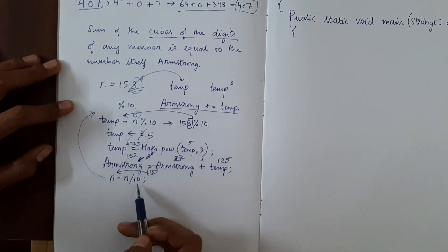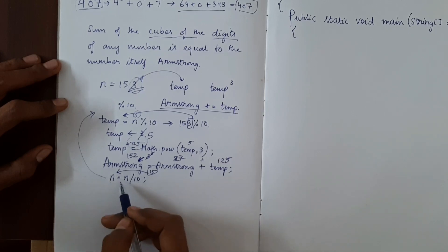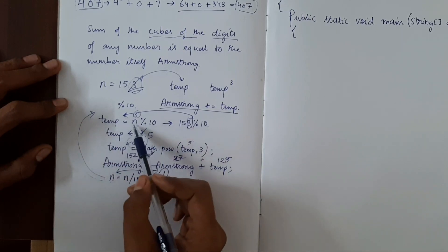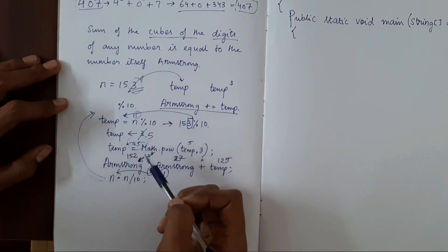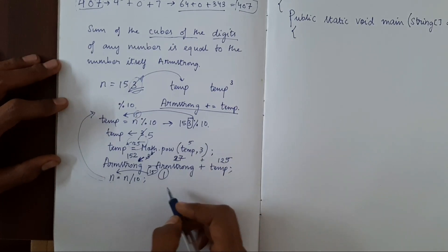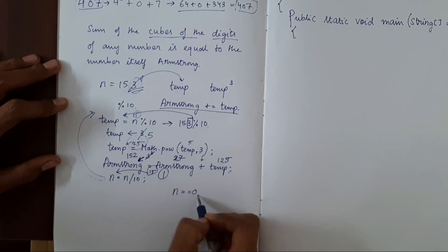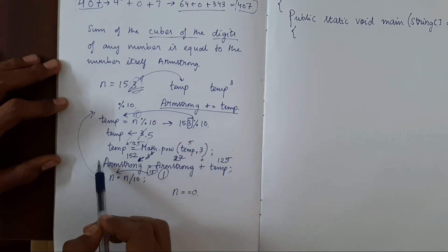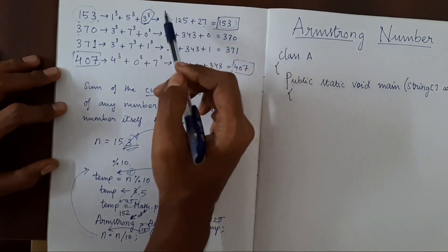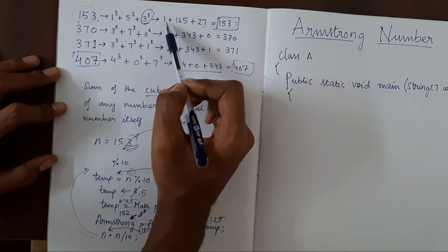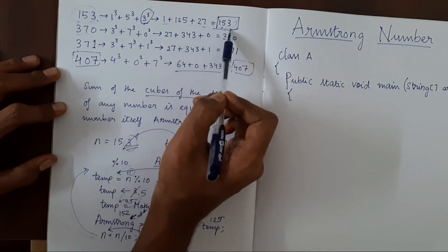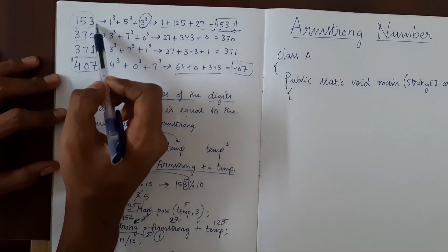Again we'll do n equal to n by 10. Now n will become 1. We'll go back here, 1 mod 10, and we'll repeat this process. We'll exit the loop when n becomes 0. Now we have this value. We have found the cubes of each digit and then added, and we got this number. Now how we'll know if this resultant number is equal to the original number.